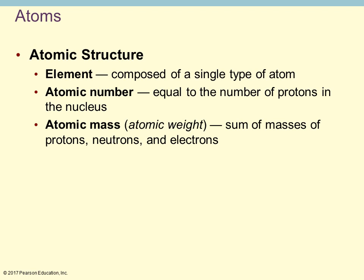An element is composed of a single type of atom — you can have a carbon element or a hydrogen element, comprising only that single type of atom. The atomic number is the number equal to the number of protons in the nucleus, which varies between each element. The atomic mass, or atomic weight, is the sum of the mass of the protons, neutrons, and electrons.